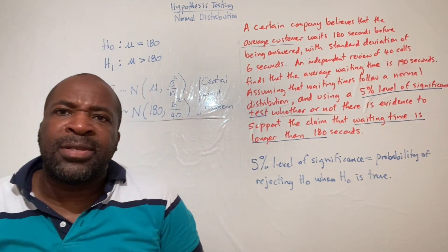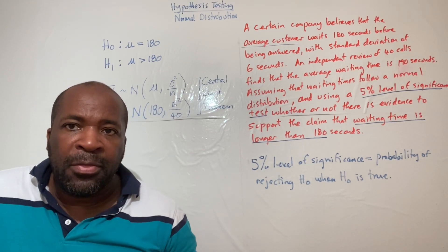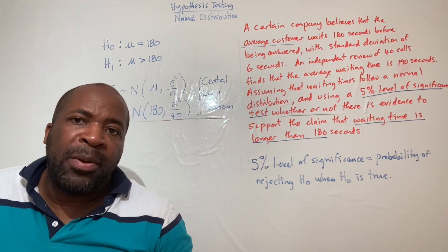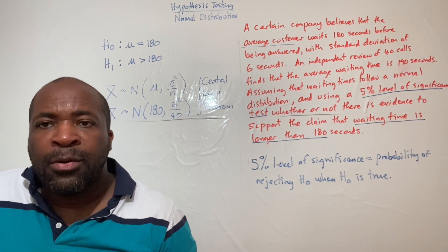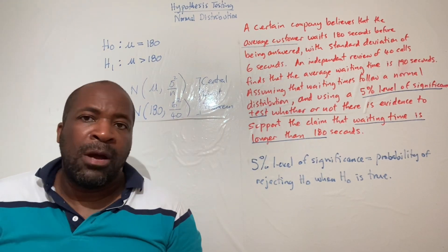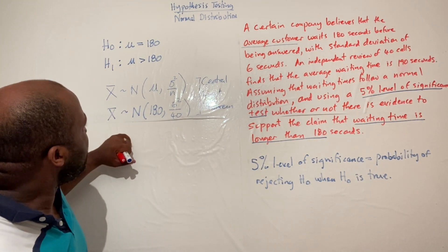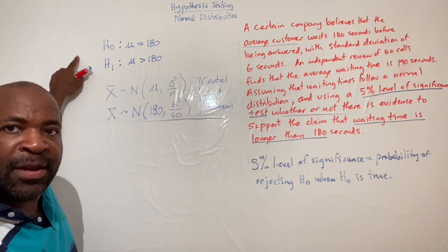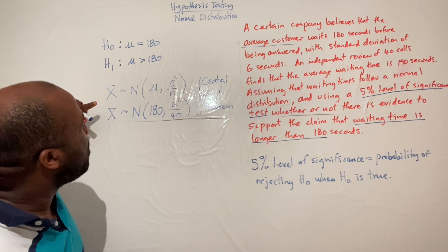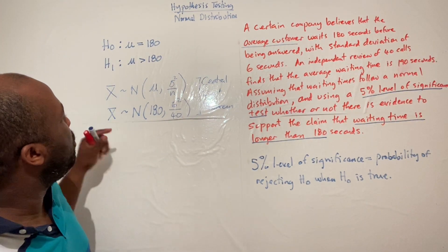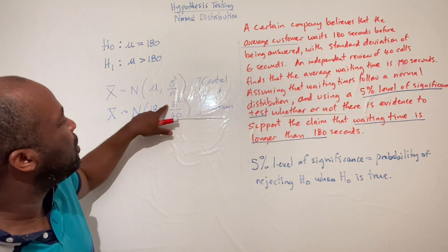Although not explicitly stated, we are applying the Central Limit Theorem, one of the most important theorems in statistics. It states that regardless of the parent distribution, X-bar will always follow a normal distribution. So X-bar follows a normal distribution with mean 180 and variance 36/40.